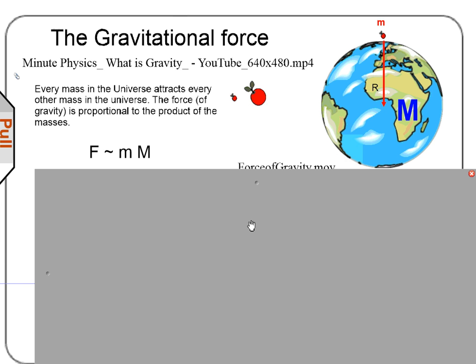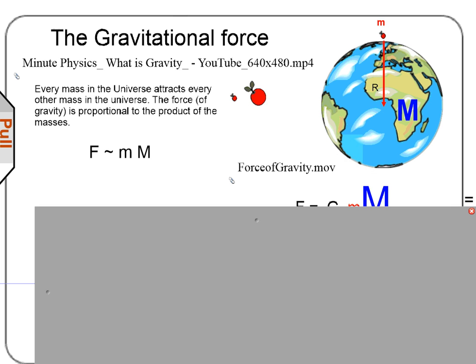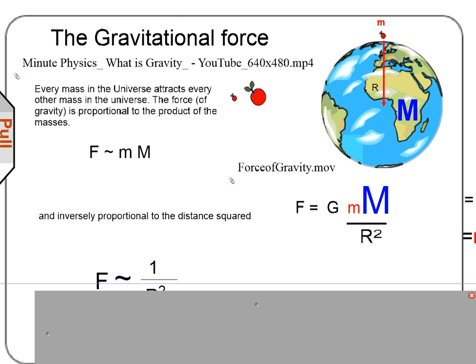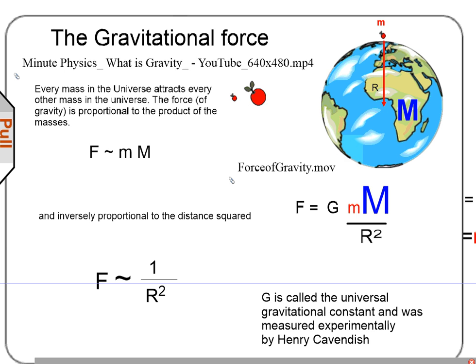What that means is that if you double one mass, the force doubles. If you double the other mass, the force doubles. If you double both masses, the force becomes four times as big. This applies to any two masses - two apples, two planets, or an apple and a planet. This force also drops off as one over the distance squared - the further you get away, the more it drops off. If you double the distance, the force will be one-fourth of what it was. If you triple it, one-ninth. If you quadruple it, one-sixteenth.